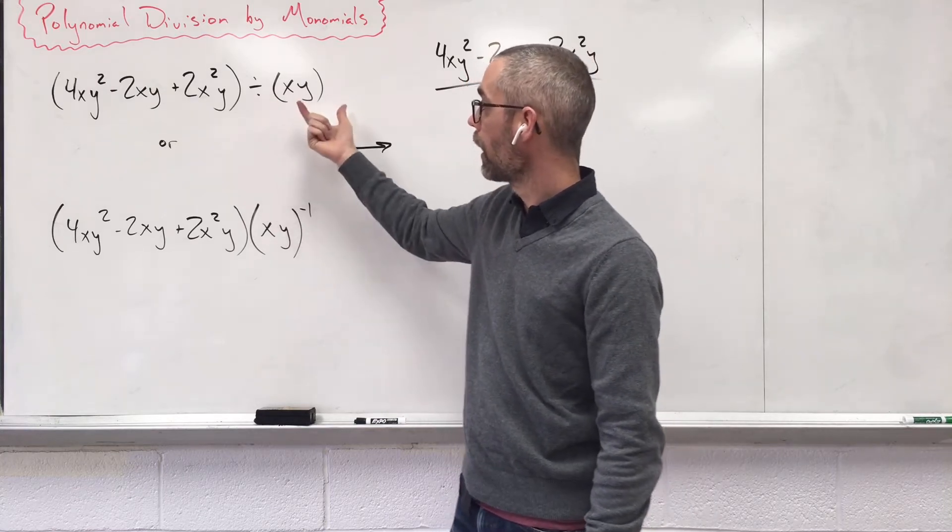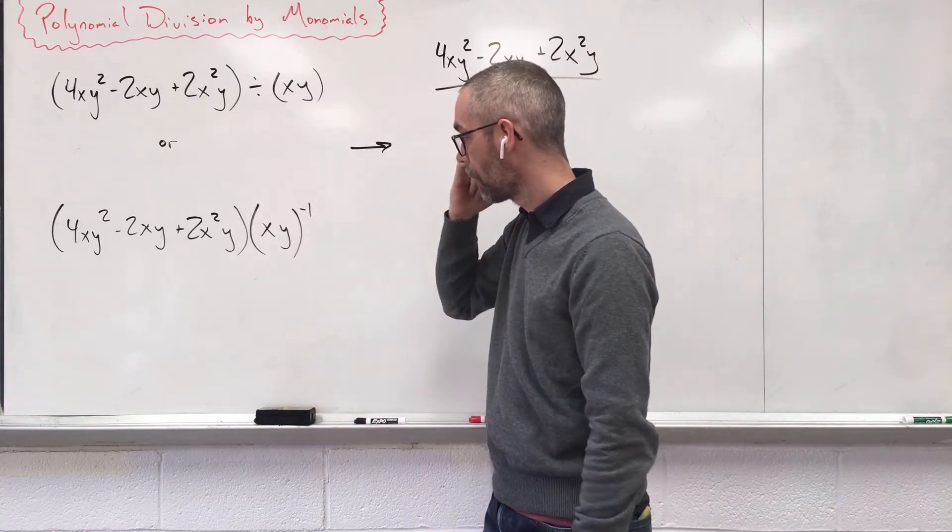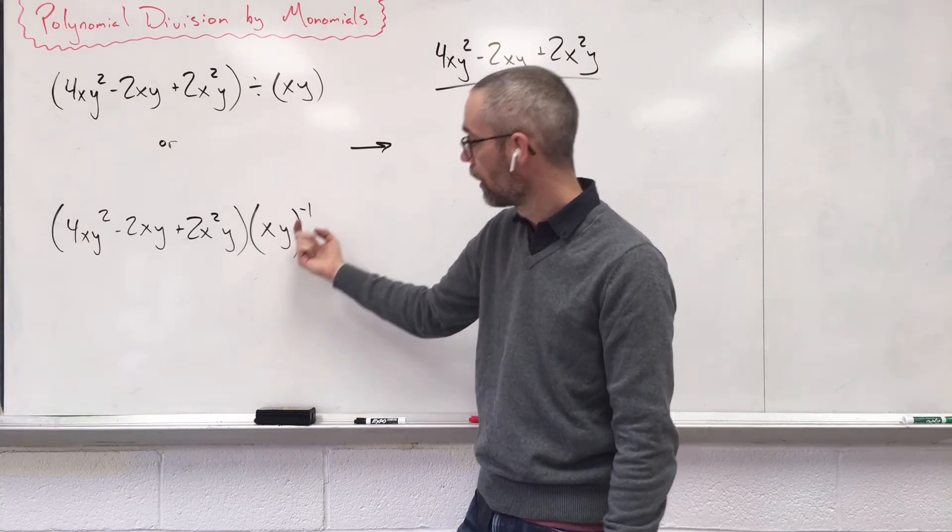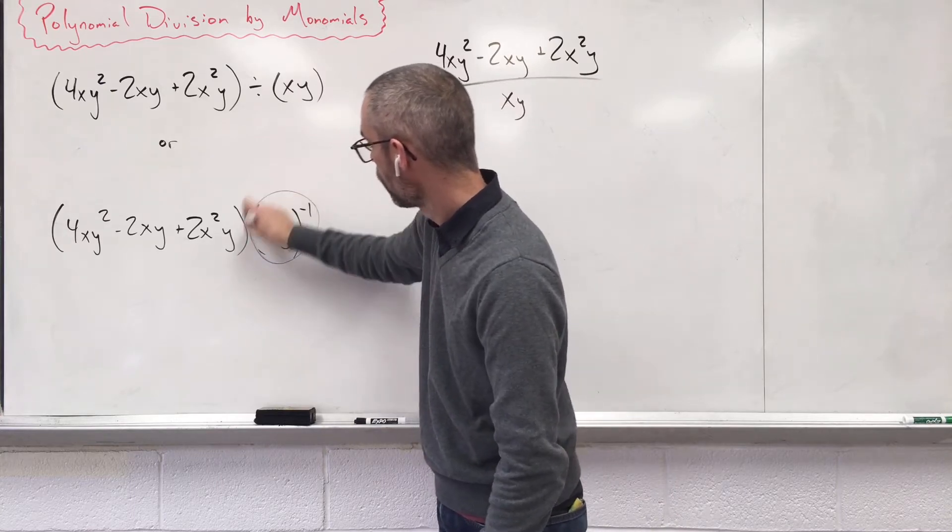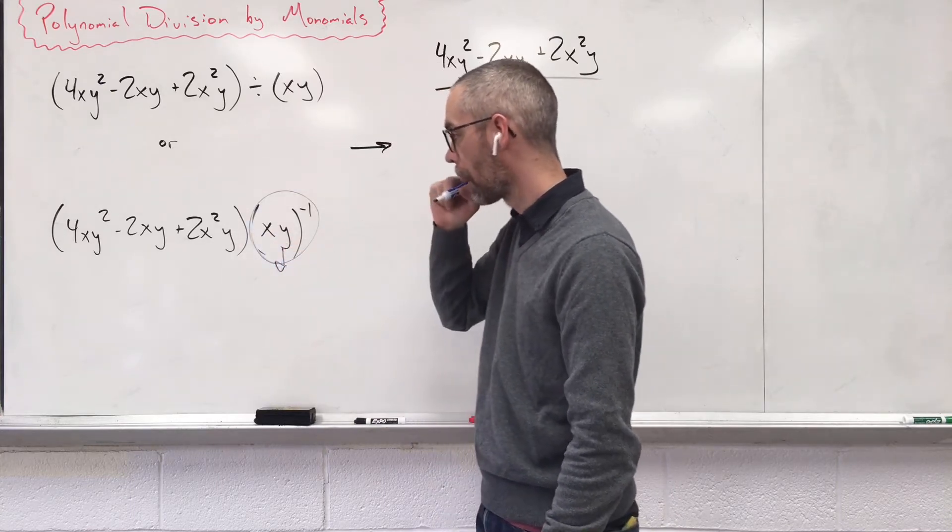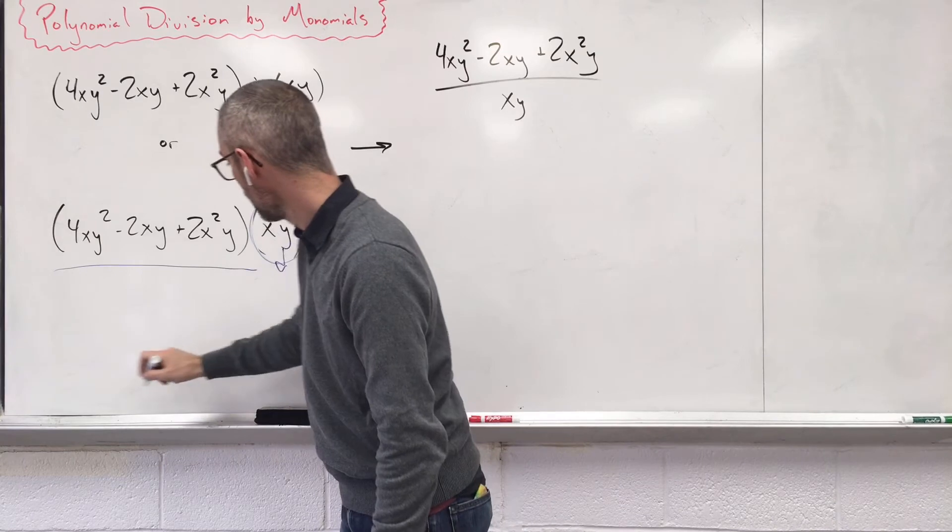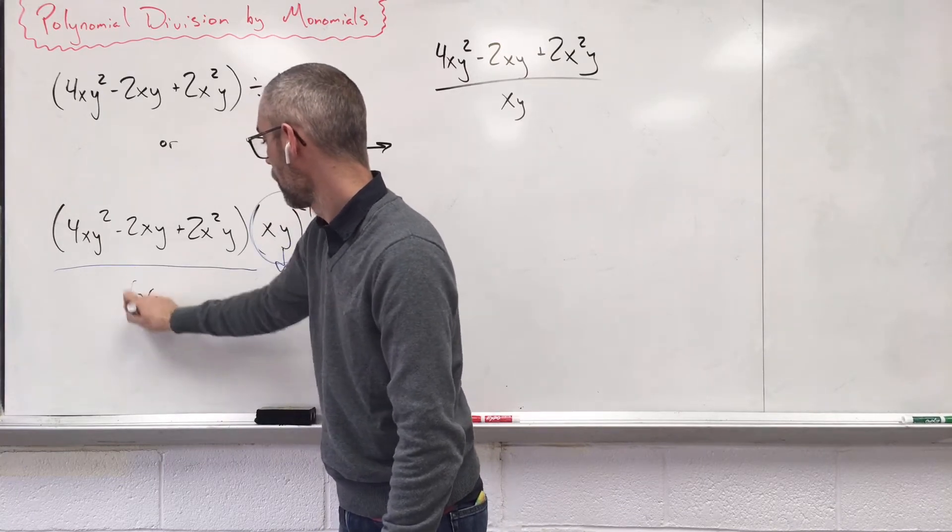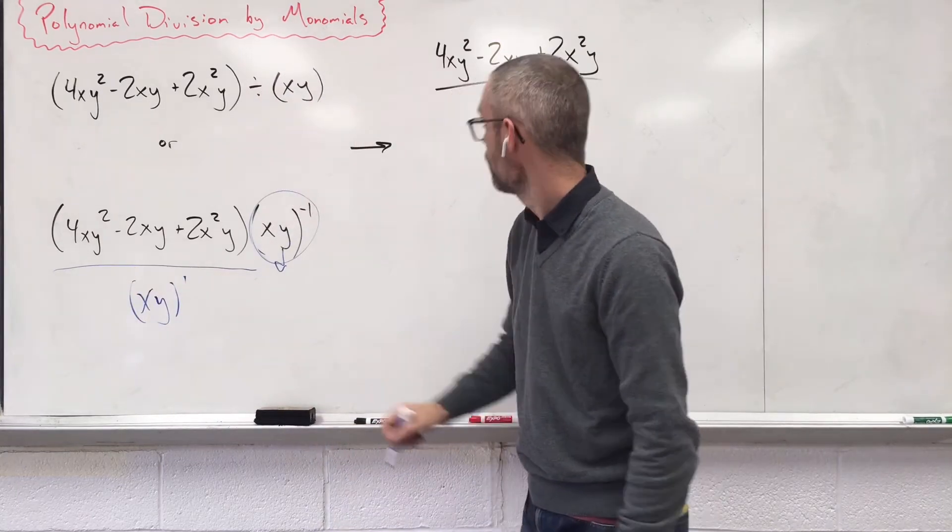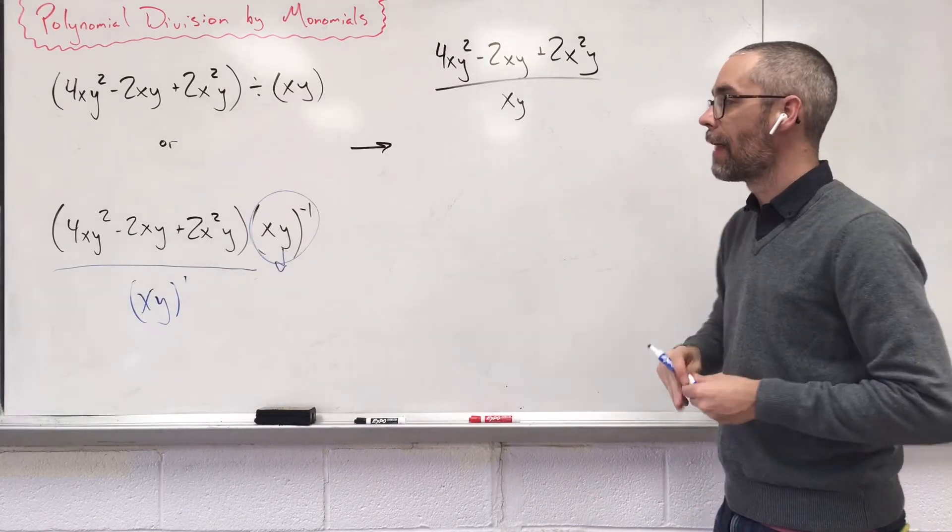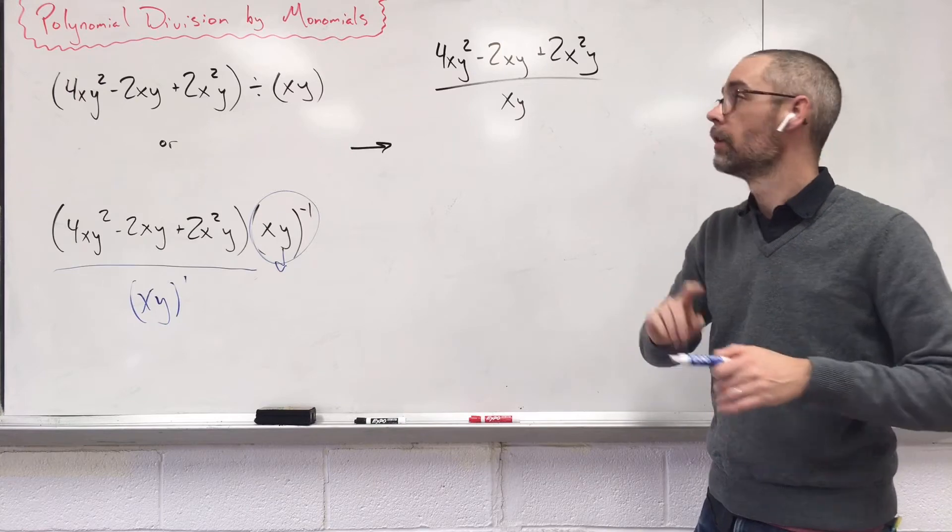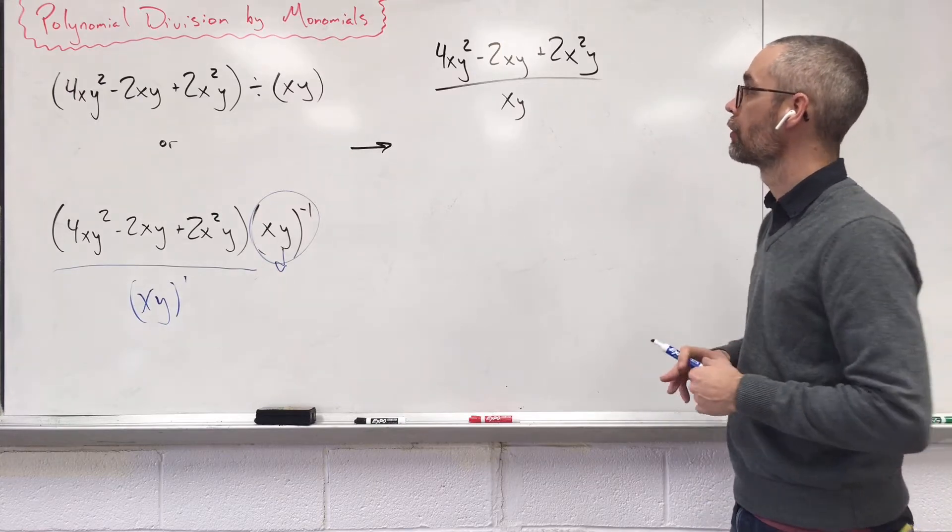So dividing by the group, and then sometimes you might even see the second group raised to the negative 1. Remember, anything with a negative 1 exponent, we're going to take it and move it to the bottom of the fraction, giving us something like that, which is that. So that's just starting the whole problem off. That's just writing it in an easy way to understand.